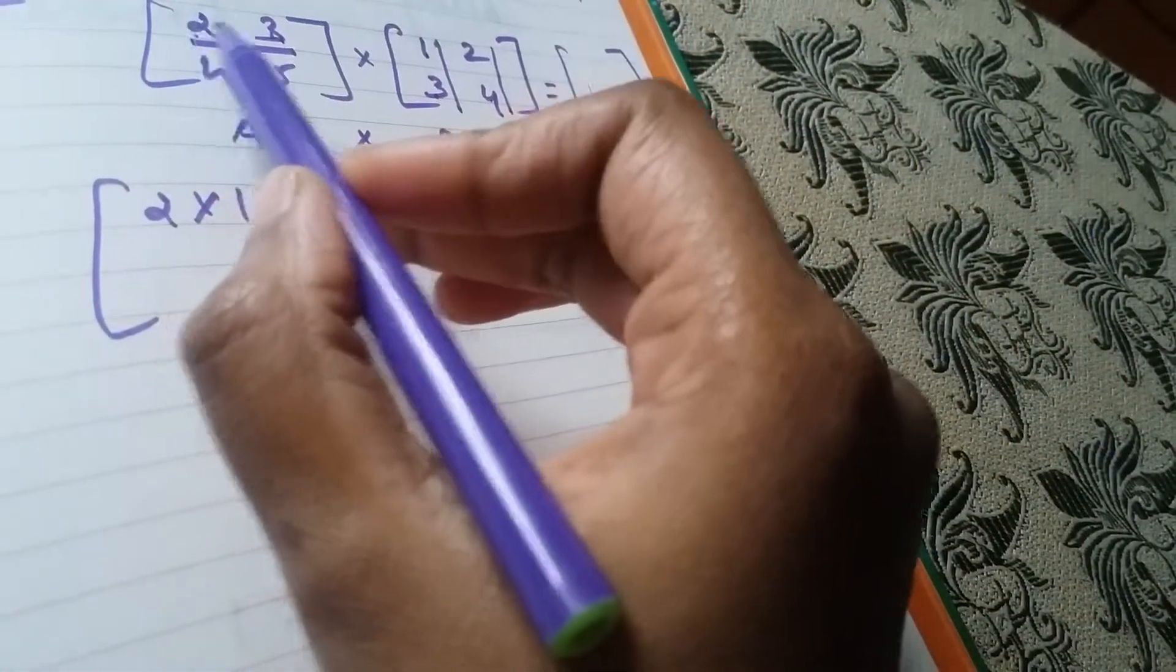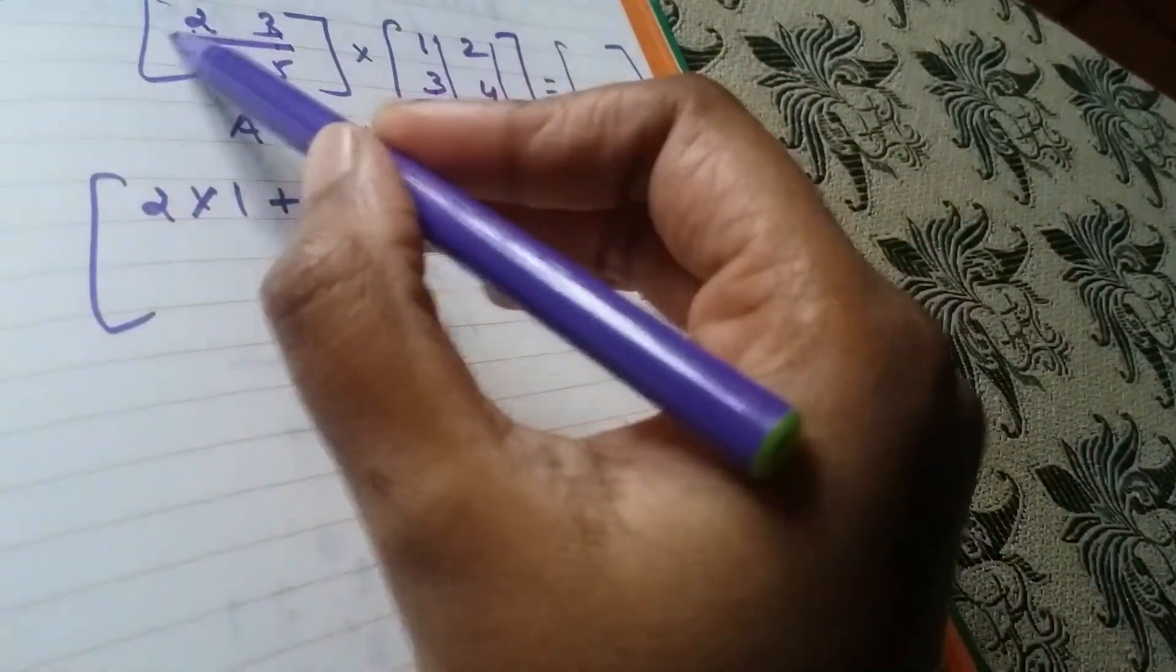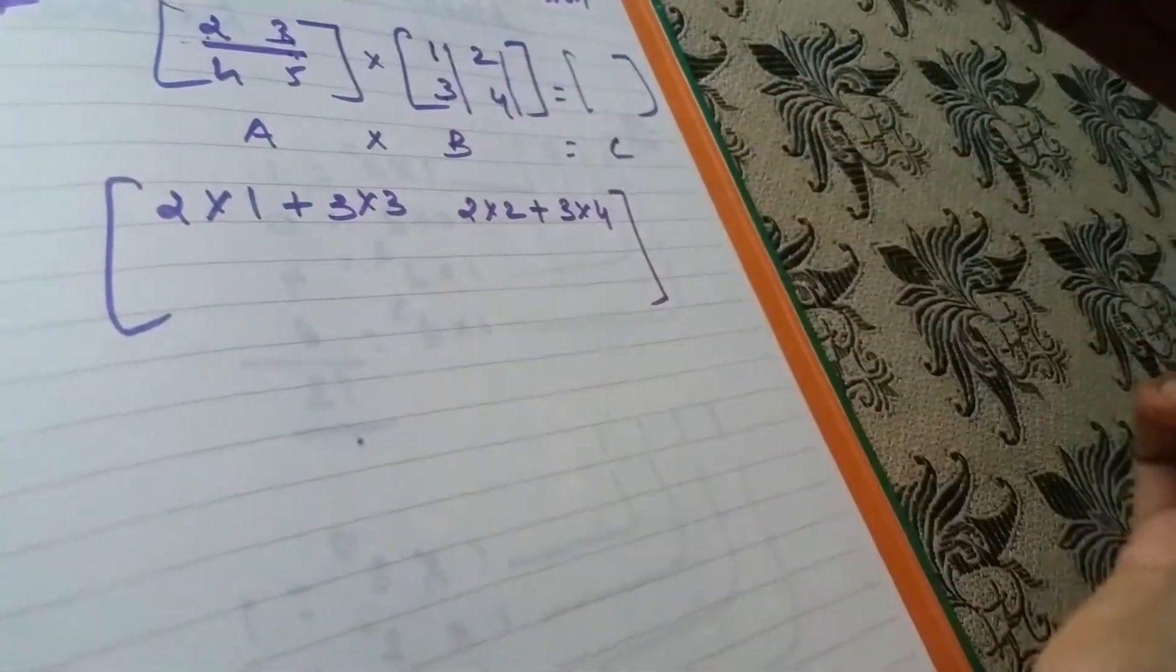That's the same. A first row, B second column. Over.